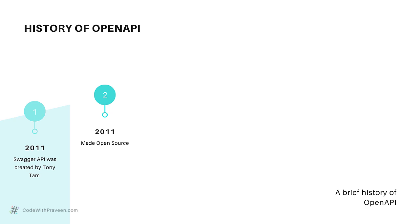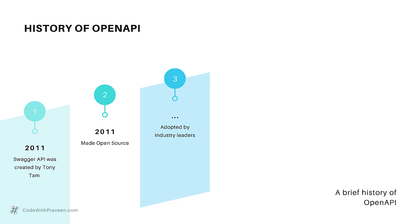In the same year 2011, Swagger API was made open source so that the open source community can collaborate and improve this specification. The next few years saw this new standard being adopted by industry leaders. The Swagger project started gaining popularity among the development community, the main reason being everyone loves standards. If all can work on a single framework to define APIs, then it becomes easier to work with APIs.